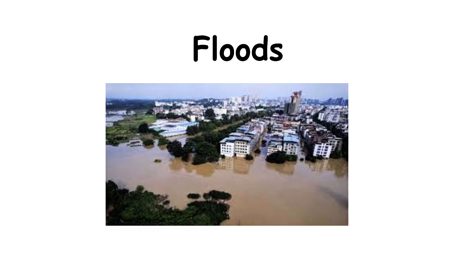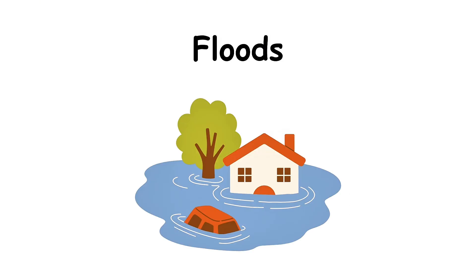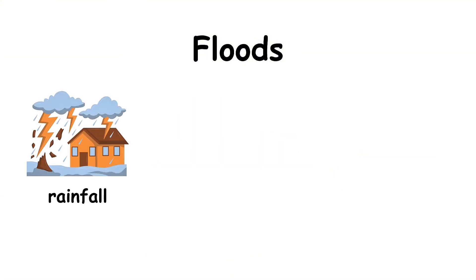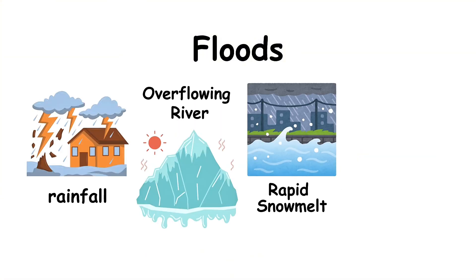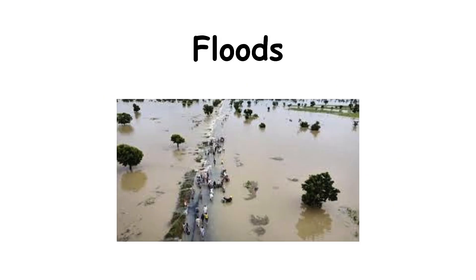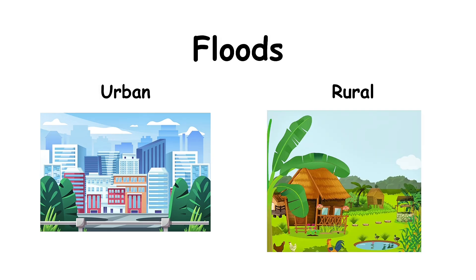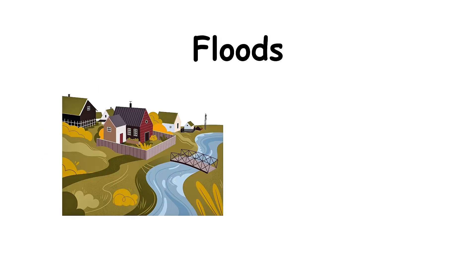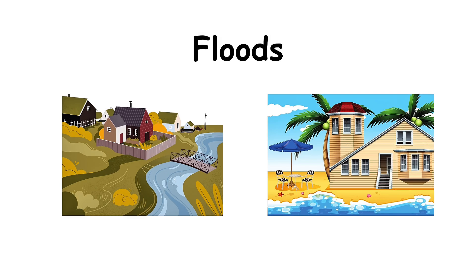Floods. A flood happens when water overflows and covers land that is normally dry. This can be caused by heavy rainfall, overflowing rivers, rapid snowmelt, storm surges, or even dam failures. Floods are among the most common natural disasters in the world, affecting both urban and rural areas. Low-lying regions near rivers, coasts, or places with poor drainage systems are the most vulnerable.